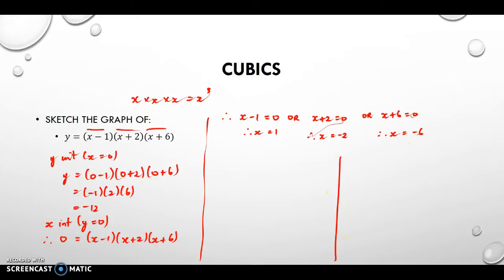And then having got the X and Y intercepts, we don't need to actually find any sort of turning points. What we can do though is we can mark in those X and Y intercepts.